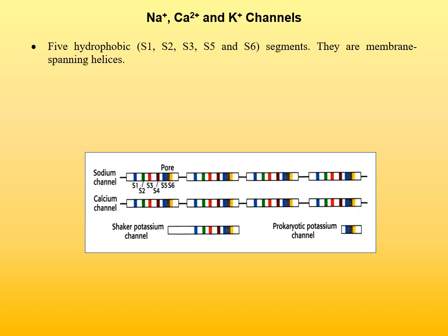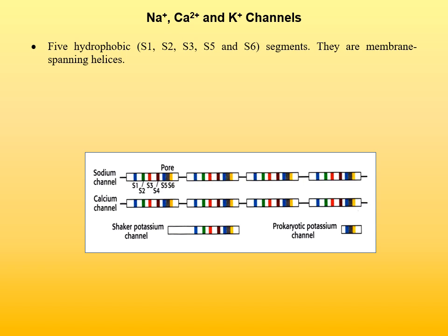There is also one hydrophilic segment, S4. In it, every third residue is arginine or lysine — those residues are positively charged. It is believed that the S4 segment acts as a voltage sensor. Calcium ion and potassium ion channels are similar to the sodium ion channel. The potassium channel is a single unit homologous to a single repeat of the sodium channel. Four potassium channel subunits form a potassium channel. Some bacterial potassium channels contain only S5 and S6 segments, which form the actual pore, while segments S1 to S4 regulate opening of that pore.